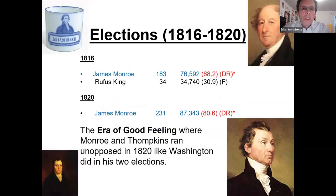The James Monroe elections also saw a very solid victory in 1816. In 1820, he ran unopposed — called the Era of Good Feeling, because supposedly everybody was happy and on the same page. But little did they know the next election was going to change everything.